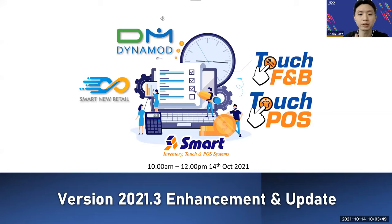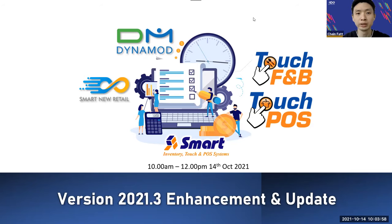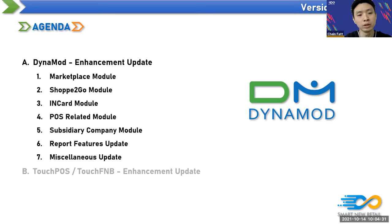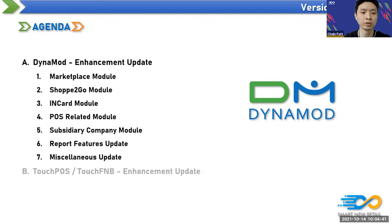Good morning. This is our last enhancement for this year, and the next one will likely be 2022. Today I will talk about the Dynamo Enhancement, which will include the Marketplace module, Shop2Go module, In-Card module, host-related modules, subsidiary company module, report features update, and miscellaneous updates.